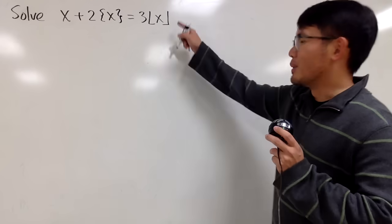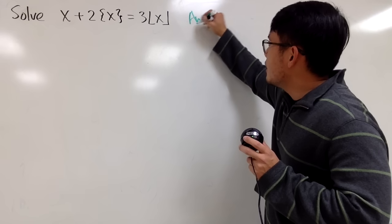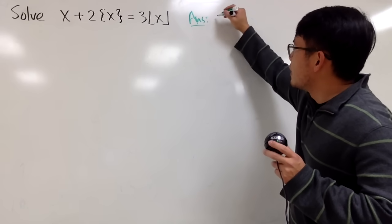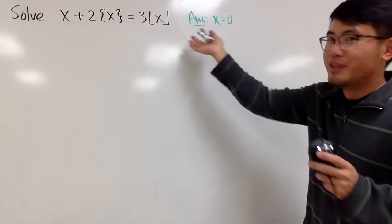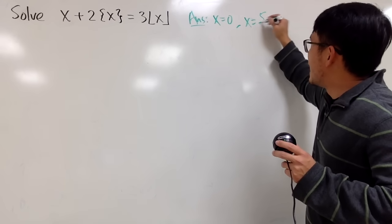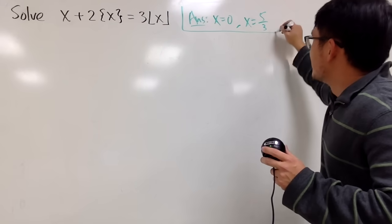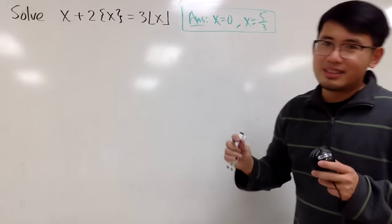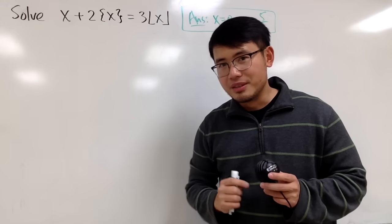I will tell you guys what the answer is right here first. We have two answers. The first one is x equals 0 — that's the trivial one. And then the other one is x equals 5 over 3. Comment down below and let me know if you got this right. Let's see how we can solve this now.